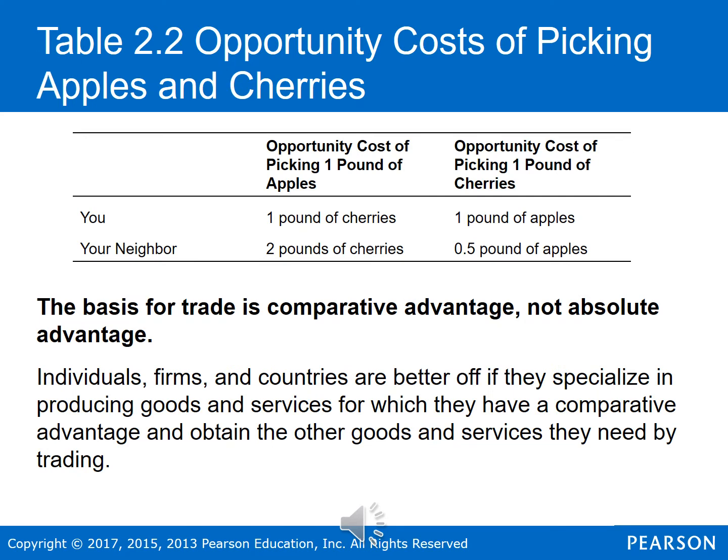Let's look at a table to help us visualize this. The opportunity cost of picking one pound of apples: for you, you're giving up one pound of cherries, because you could pick either 20 pounds of apples or 20 pounds of cherries. Now for your neighbor, the opportunity cost of picking one pound of apples is two pounds of cherries — because she can pick 30 pounds of apples or 60 pounds of cherries. So to produce one pound of apples, she's giving up more cherries than you are, which makes you relatively better at producing apples at a relatively lower cost compared to her.